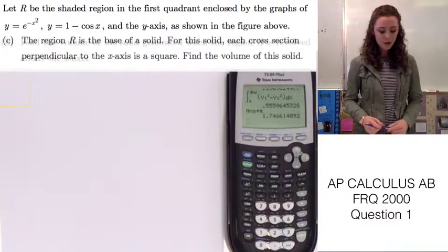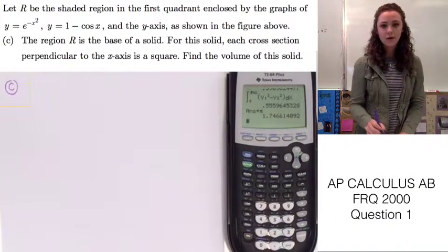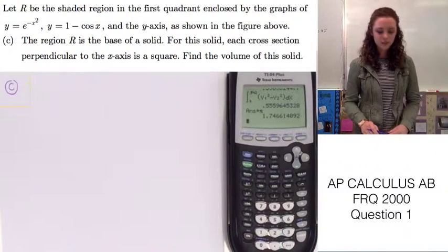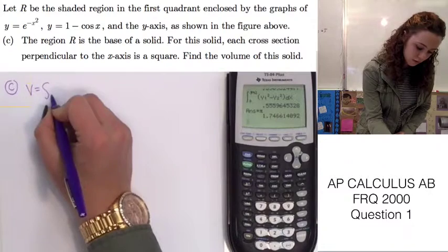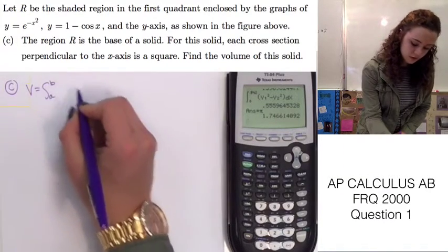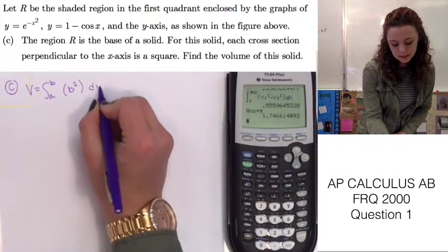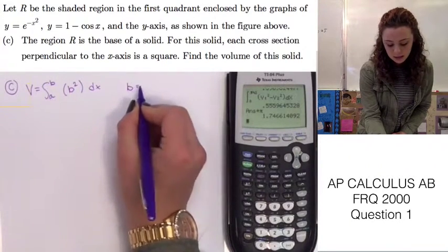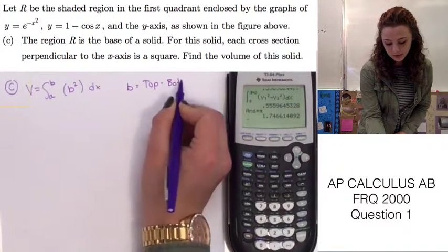Find the volume of this solid. We know that finding the volume of a cross-section that's a square is going to have the equation volume is equal to the integral from the lower function to the upper function of the base squared dx. And we know that the base is going to be equal to the top function minus the bottom function.